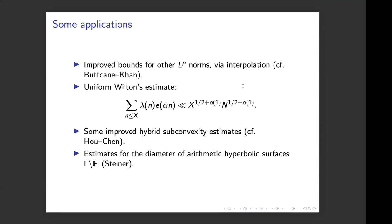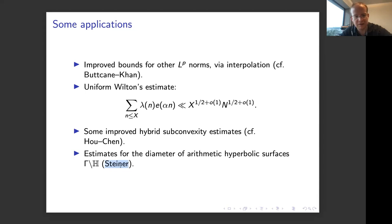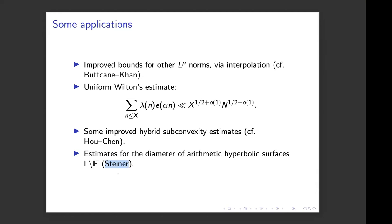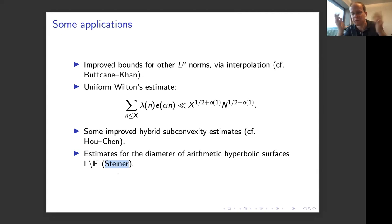Follow-up question: does it give any bound on the diameter of Ramanujan graphs? It gives the bound that follows from Deligne or Eichler, but without appealing to that — it recovers the same bound of two times log of something, but provides a proof that doesn't need that result.